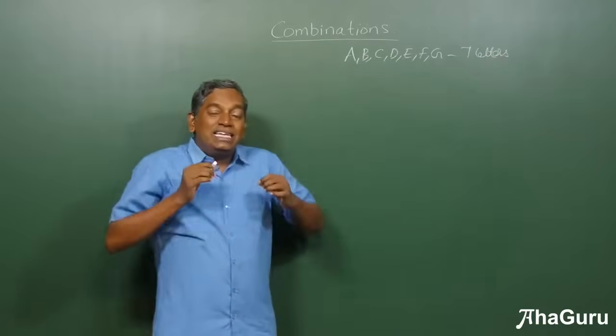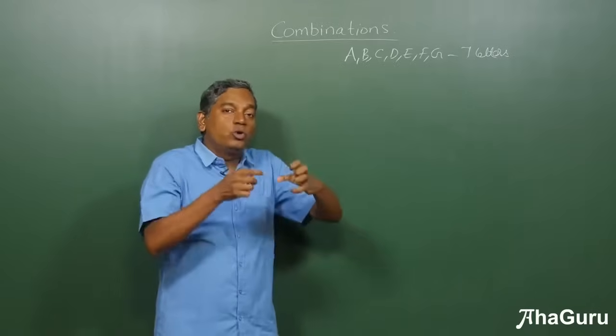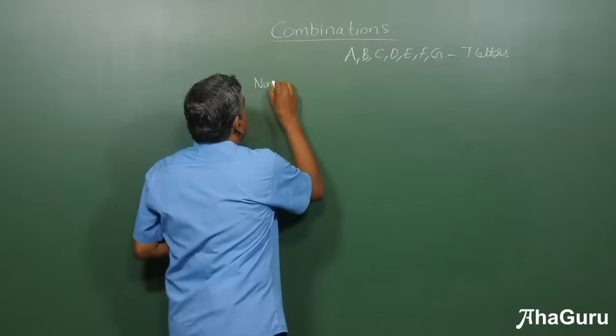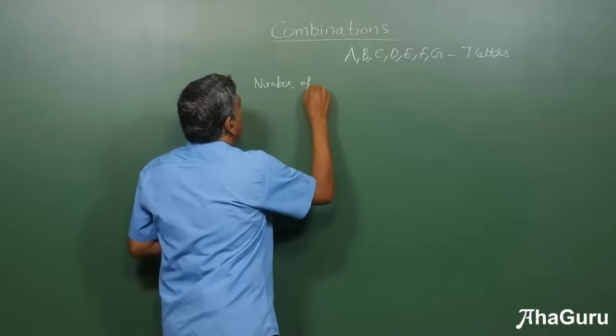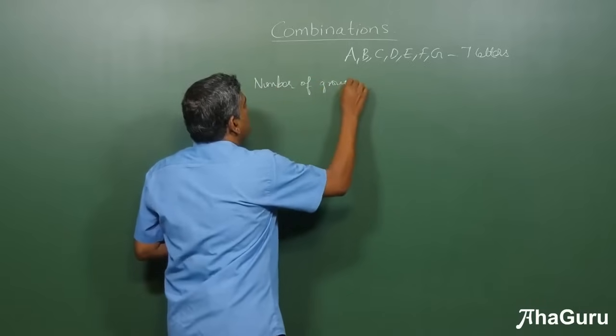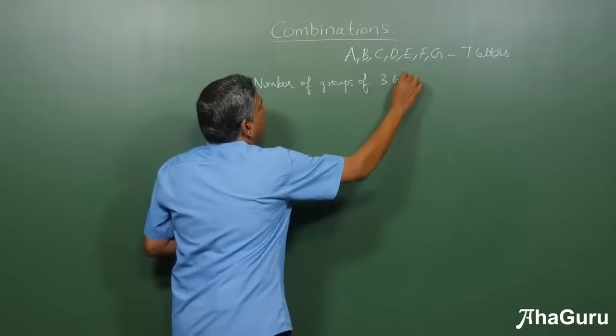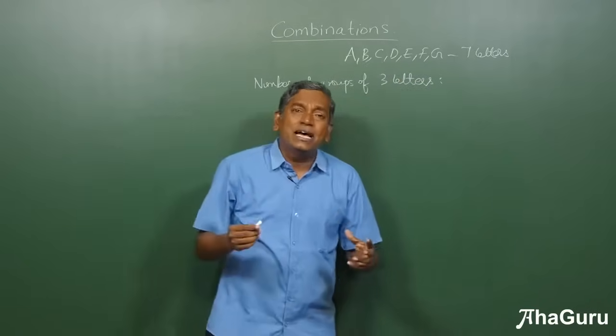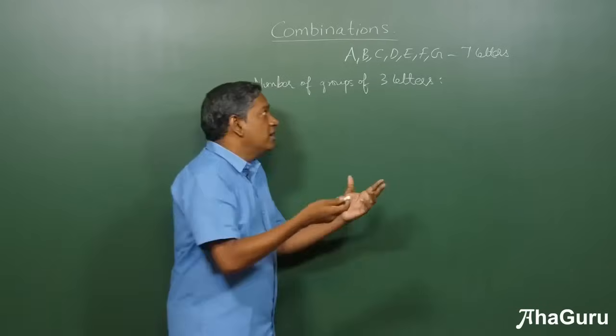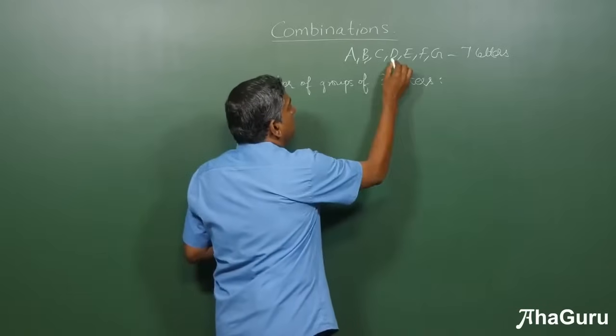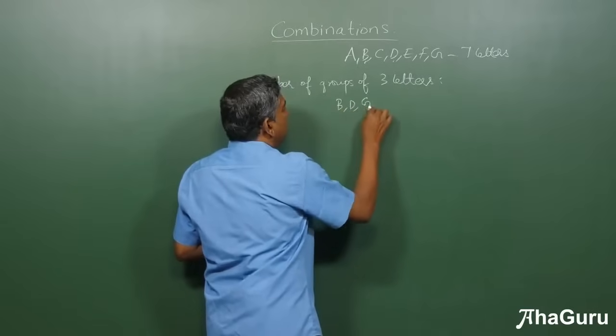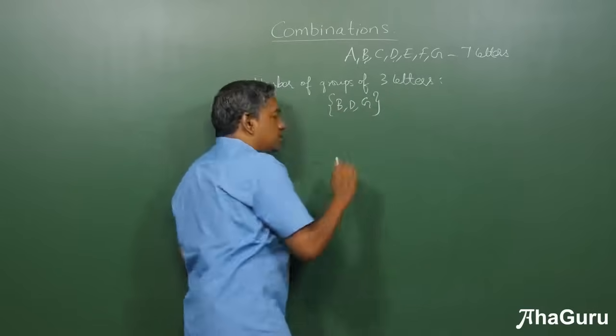Now, let's say that we want to have groups of 3 letters. So we want to find the number of groups of 3 letters. Now, what is an example of a group of 3 letters? For example, if I pick B, D, and G, I'll just put it in curly brackets. This is one group.